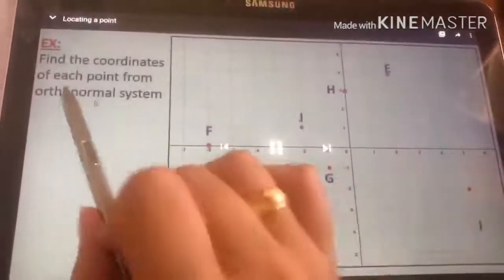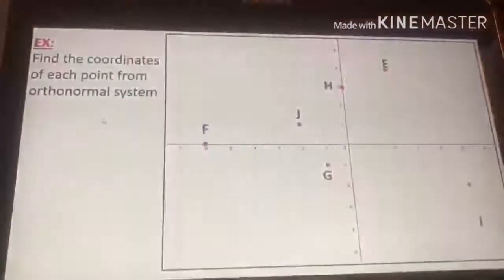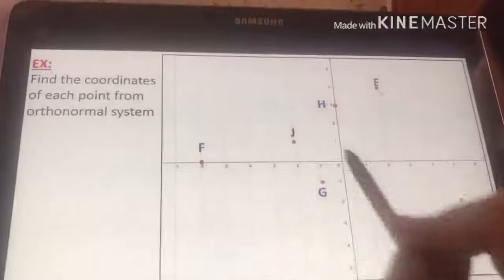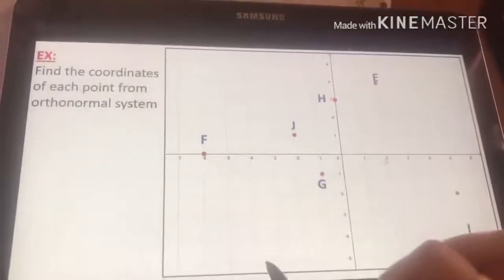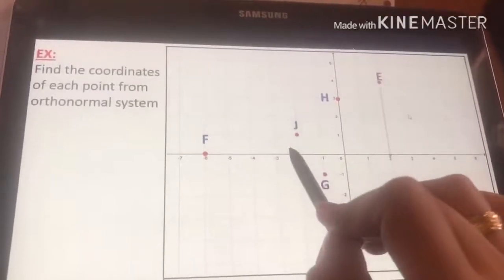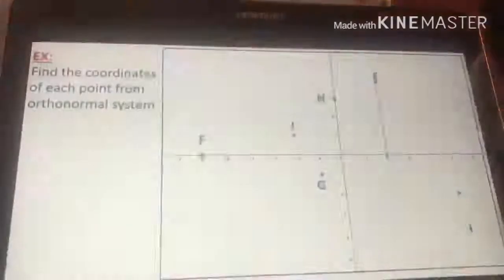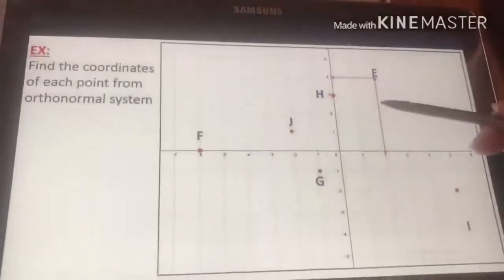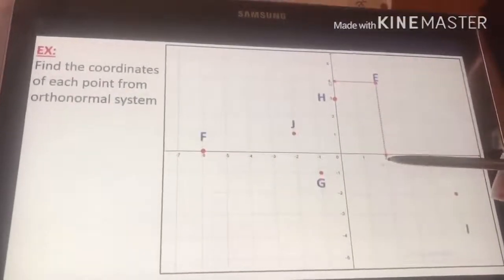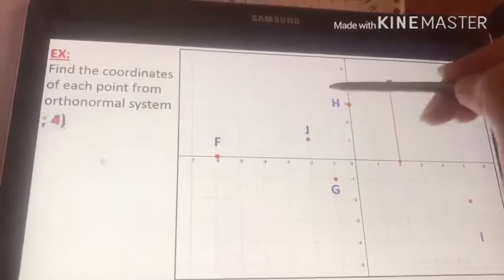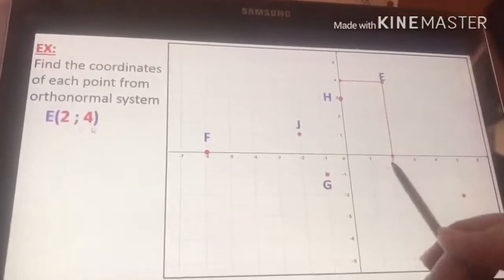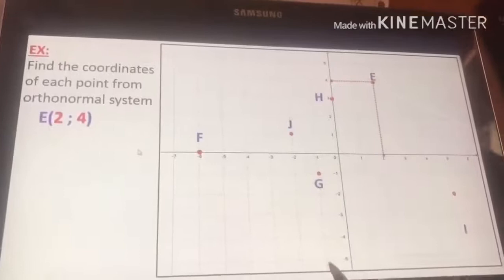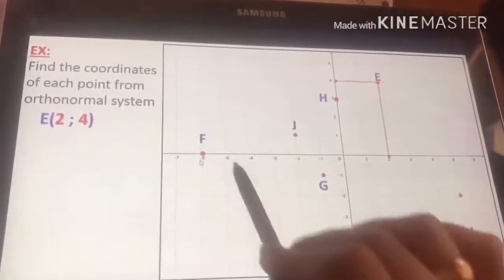Let's take this exercise. Find the coordinates of each point from the orthonormal system. Here we have points. I have to find their coordinates. We said if I want to find their coordinates, example E. I have to make perpendicular line to the x-axis. Perpendicular line to the y-axis. So E is 2, its coordinate is 4.